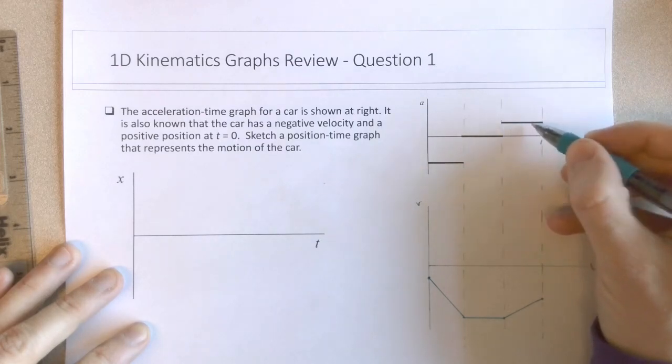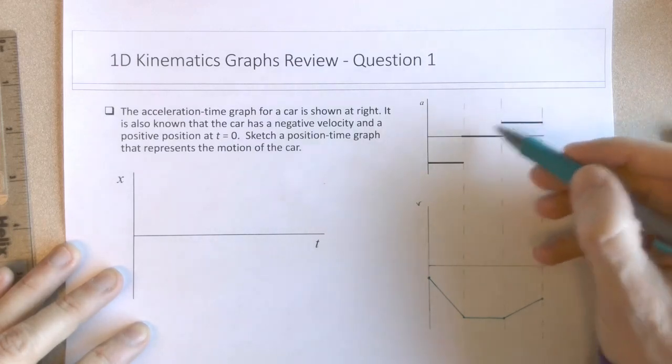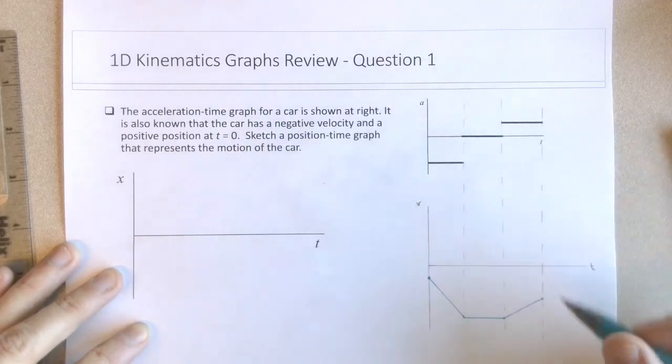and then the positive change in velocity underneath this particular curve, underneath this line. So overall the net change in the velocity should be negative, so we should end up at a lower negative value than where the object started.